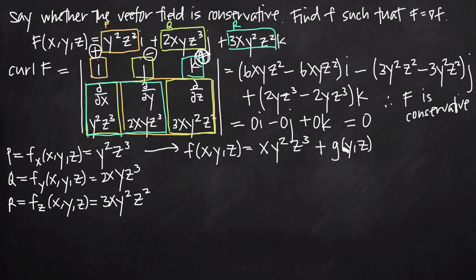Adding g(y,z) is similar to adding the constant of integration C in single-variable calculus. We add a function in terms of y and z to account for those variables. We don't know the value of g yet — we just know it must be in terms of y and z. So we add it to our function for f, and now we need to solve for g.